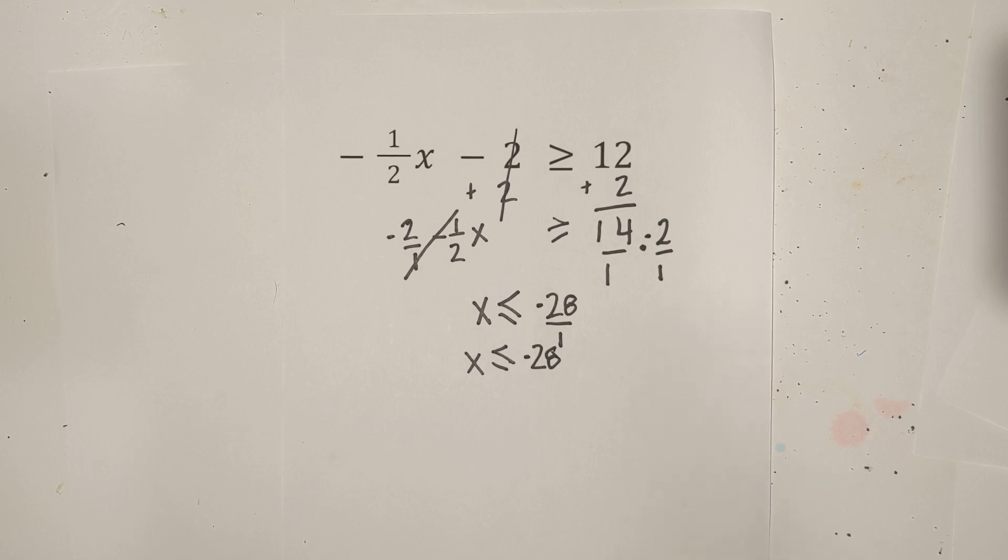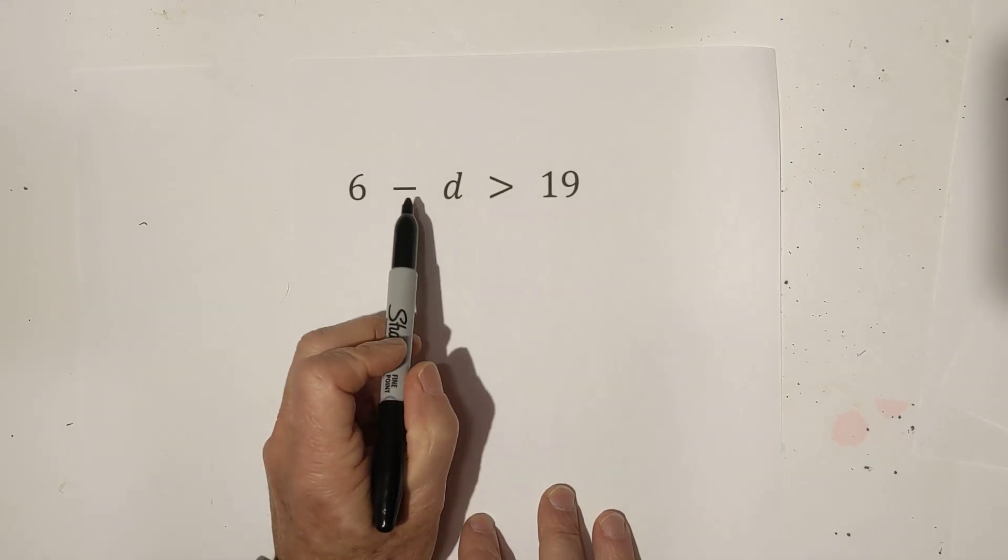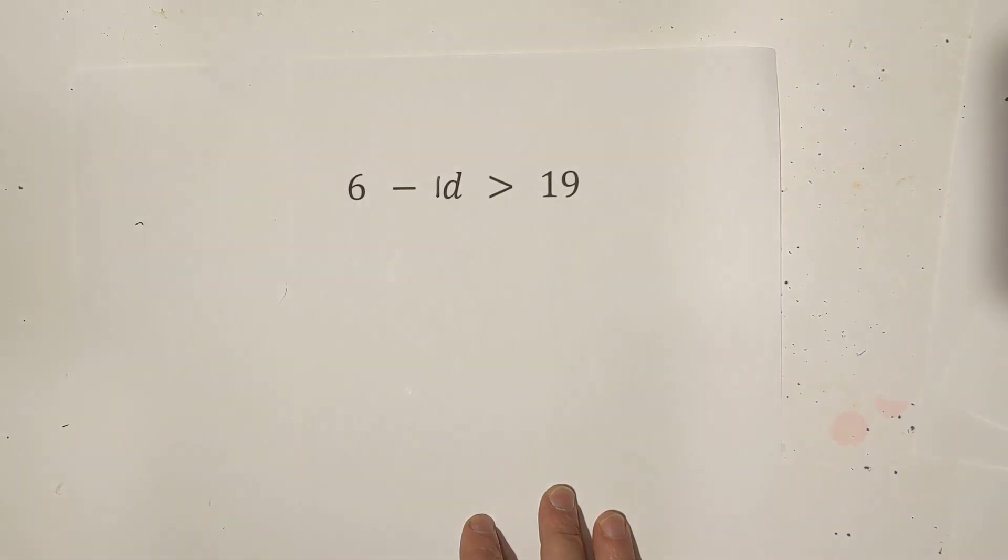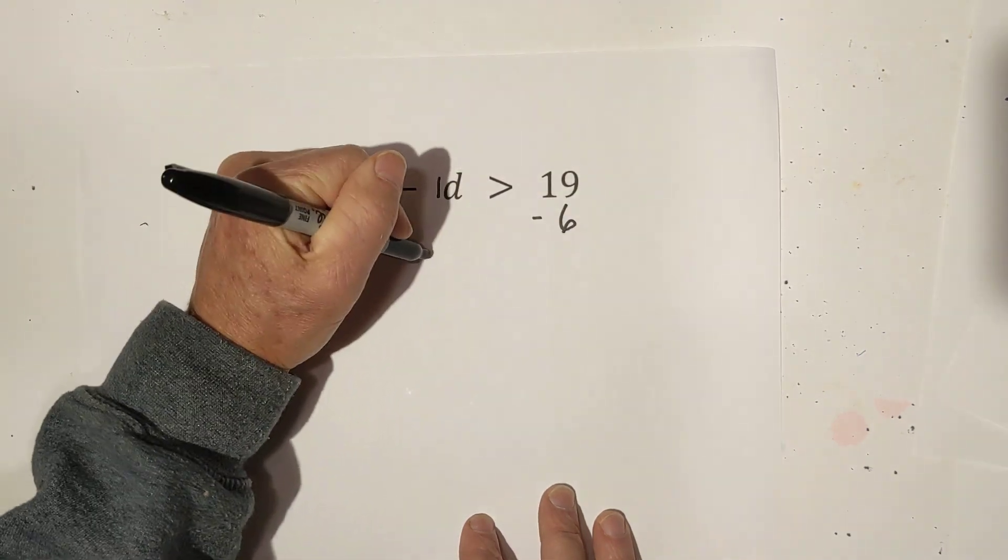Let's do one final example. Our final example looks very much like our very first one. We have a negative variable so I'm going to go ahead and put a 1 in front of it. Subtract 6 from both sides. These cancel.